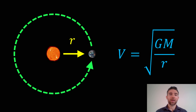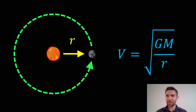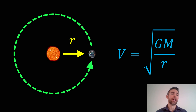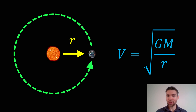Welcome to this video. My name is Phil and I am a Senior Lecturer in Astrophysics at the University of Lincoln. In this video I wanted to go through the derivation for orbital velocity when the orbit is actually circular.